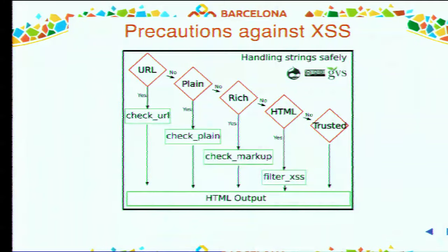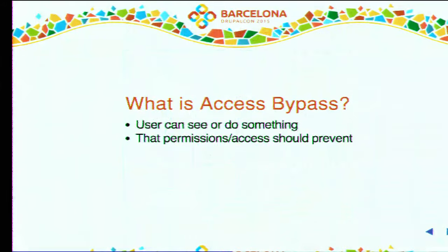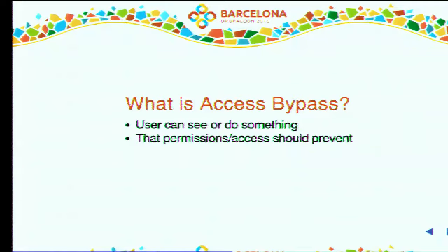Now talking a little bit about access bypass — something a user can do or see that they shouldn't be able to. When a user can do something that's called access bypass; when they can see something it's called information disclosure. We should make sure in Drupal that permissions, access callbacks, or other API constructs are in place to prevent exactly that.